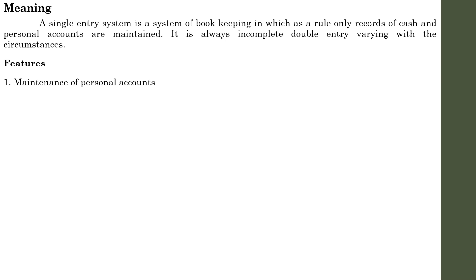Usually in Single Entry System, nominal accounts are ignored. In theory, cash transactions are also sometimes ignored, and sometimes they are recorded. We will discuss where cash transactions are recorded and where they are ignored during the practical area, because we will be dealing with two types of methods — one method where cash is considered and another where cash transactions are not. In general, Single Entry System records specifically personal accounts. Second feature: Maintenance of Cash Book. A cash book which usually mixes up both personal transactions and business transactions is maintained.